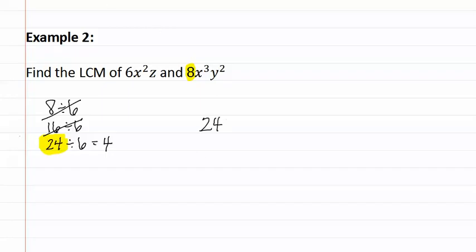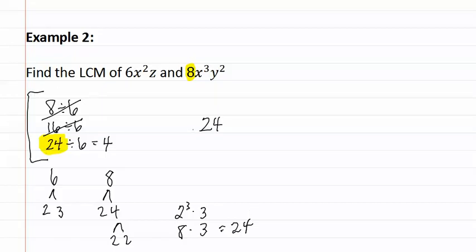Remember you can also use prime factorization in which the six would have been a two and a three, and the eight would have been three twos, which would mean that we'd have 2³ times 3 or eight times three, which would still have gotten us twenty-four. As you can see, the mental math is much easier when we have small numbers such as six and eight.